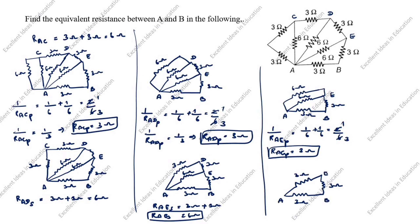These resistors are in series: R_AB_series = 3 ohm + 3 ohm = 6 ohm. Next, these are in parallel: R_AB_parallel = 1/6 + 1/6 = 3 ohm.